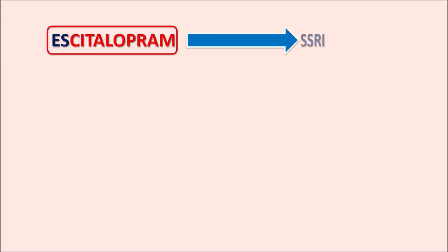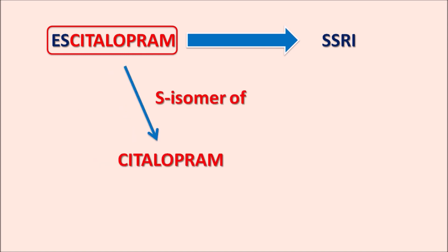Today in this video we are going to discuss escitalopram. This is one of the SSRIs — selective serotonin reuptake inhibitors. Within the name we can observe the prefix 'ES' which indicates this drug is the S-isomer of citalopram. Citalopram is again an SSRI which is available as a racemic mixture — both R-isomer and S-isomer are present — and the pure S-isomer of citalopram is escitalopram.